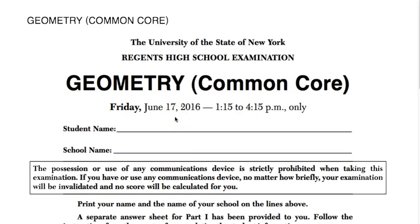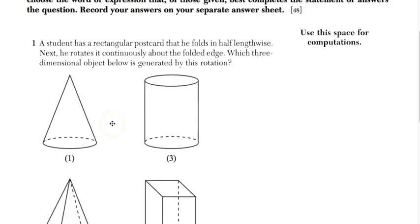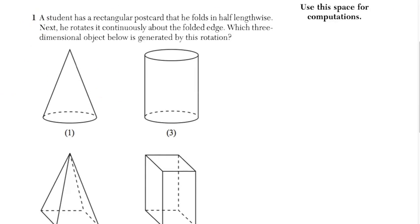All right, for this video we will be covering questions 1 through 8 of the multiple choice of the June 2016 Geometry Common Core Regents. Let's get this going. So for our first question, it tells us, a student has a rectangular postcard that he folds in half lengthwise. Next, he rotates it continuously about its folded edge. Which three-dimensional object below is generated by this rotation?